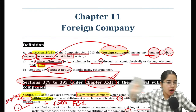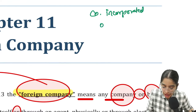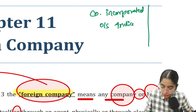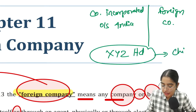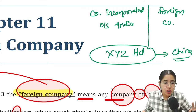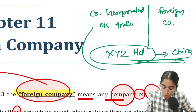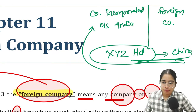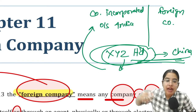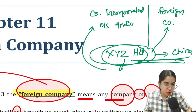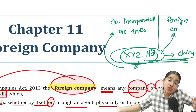Not every company incorporated outside India is a foreign company. There is a difference between 'company incorporated outside India' and 'foreign company.' Let's say there is a company XYZ Limited working in China and not operating in India — this is only a company incorporated outside India, not a foreign company. But if this company also starts selling its products and services in India, then it will be considered a foreign company. Foreign company means that outside company which is also doing business in India.